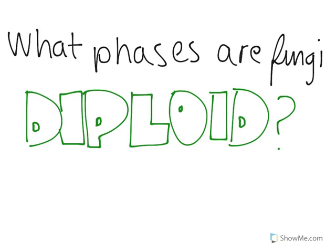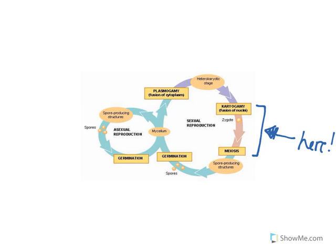First off, what phases are fungi diploid? For this question, it's easiest to look at one of these reproduction charts for fungi, and if you look at it, it's only diploid when it's here — just right after karyogamy, which is a fusion of nuclei.